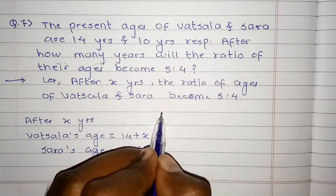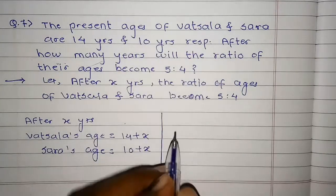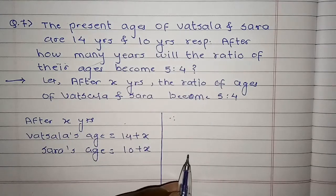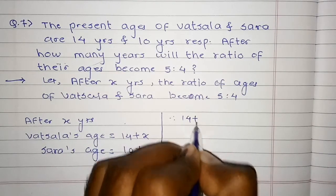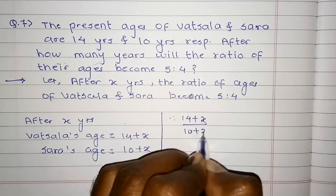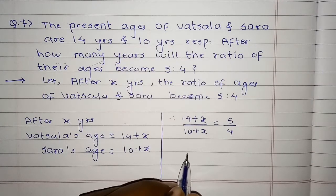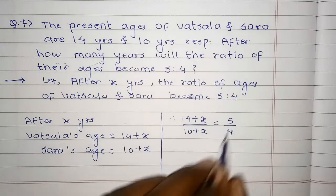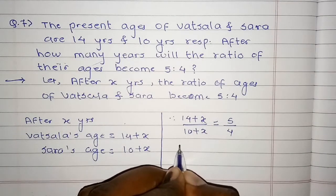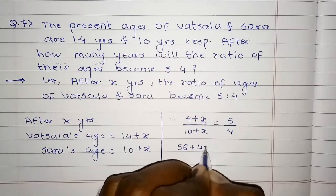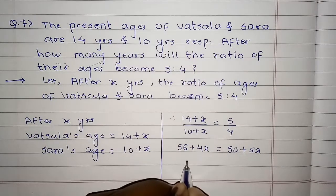ओके, then अब after X years उनके ages का ratio बनता है 5 is to 4. तो ratio हमें Vassala की age का Sara की age के साथ लेना है, तो 14 plus X upon 10 plus X equals to 5 by 4. Simplify करेंगे, 4 इधर shift करते हैं और 10 plus X इधर shift करते हैं, तो 4 times 14 plus 4X equals to 50 plus 5X, यानी 56 plus 4X equals to 50 plus 5X.